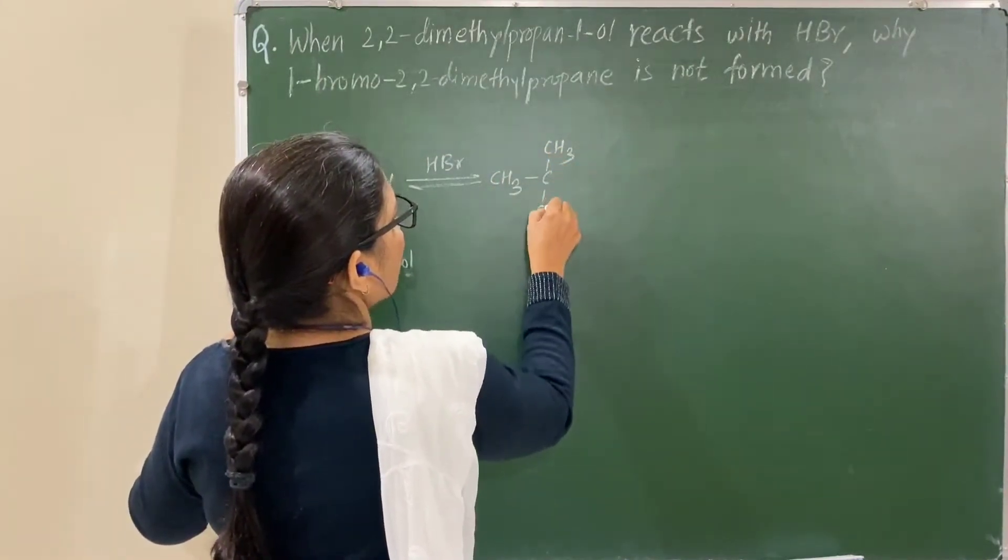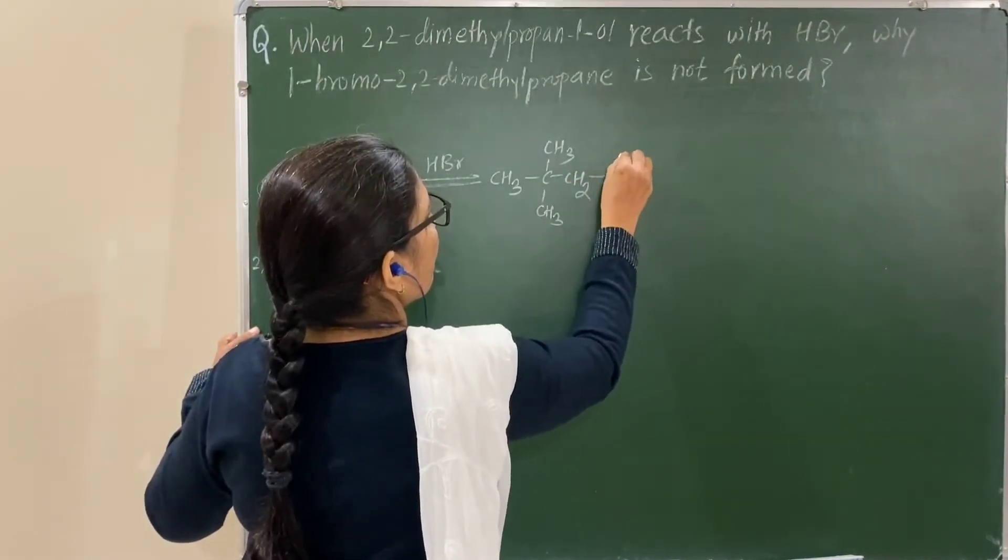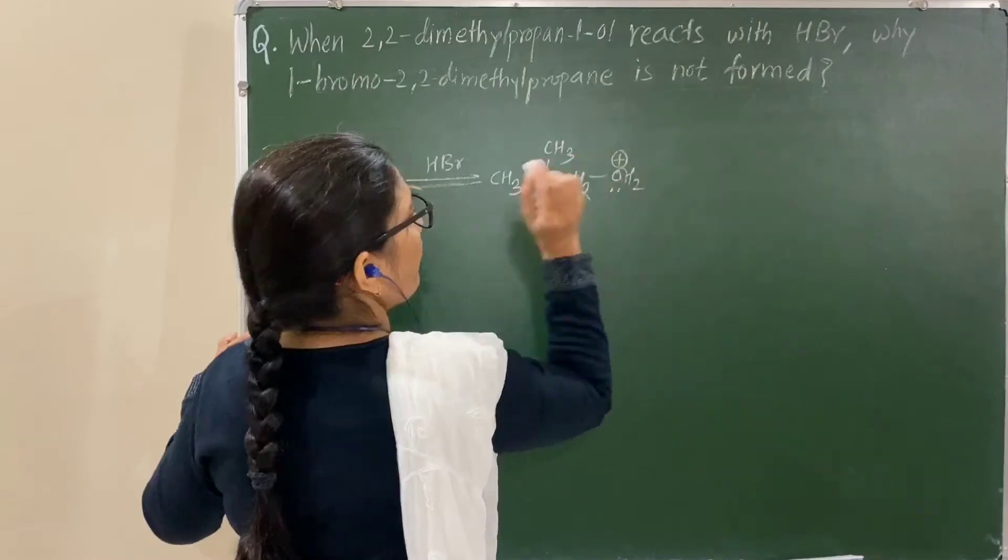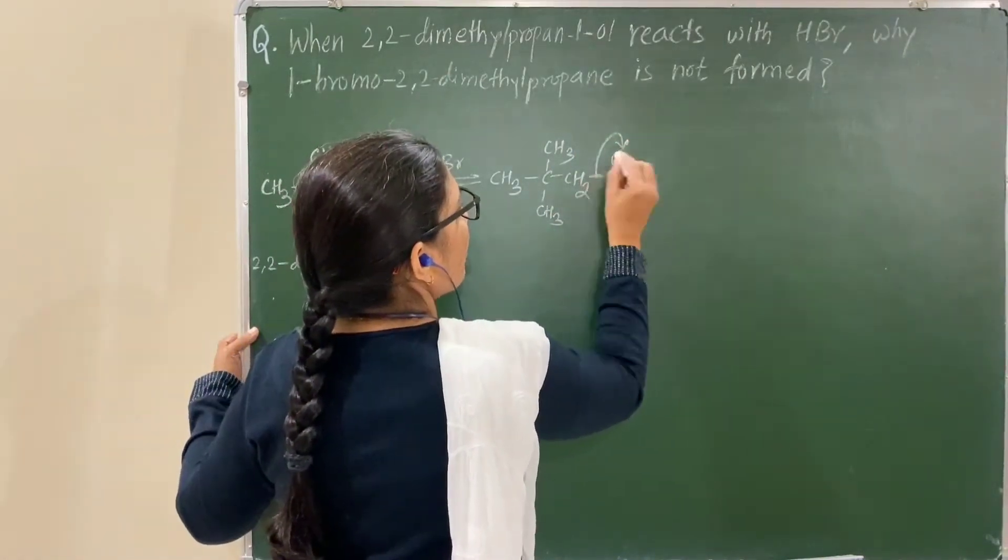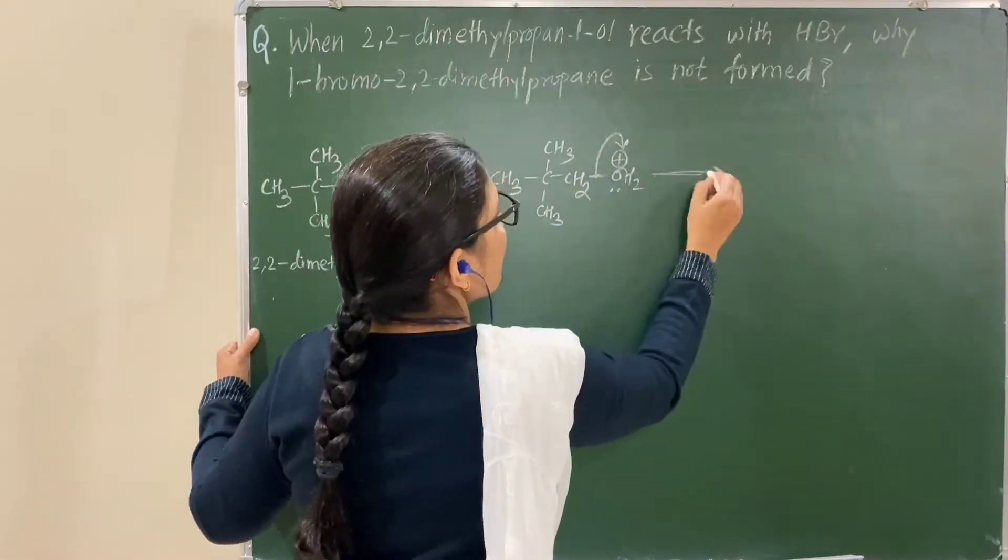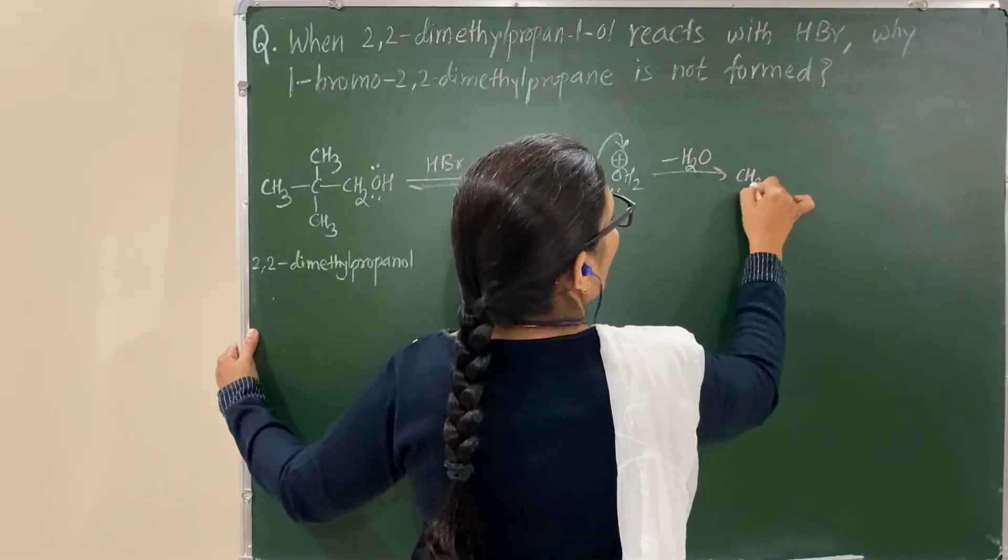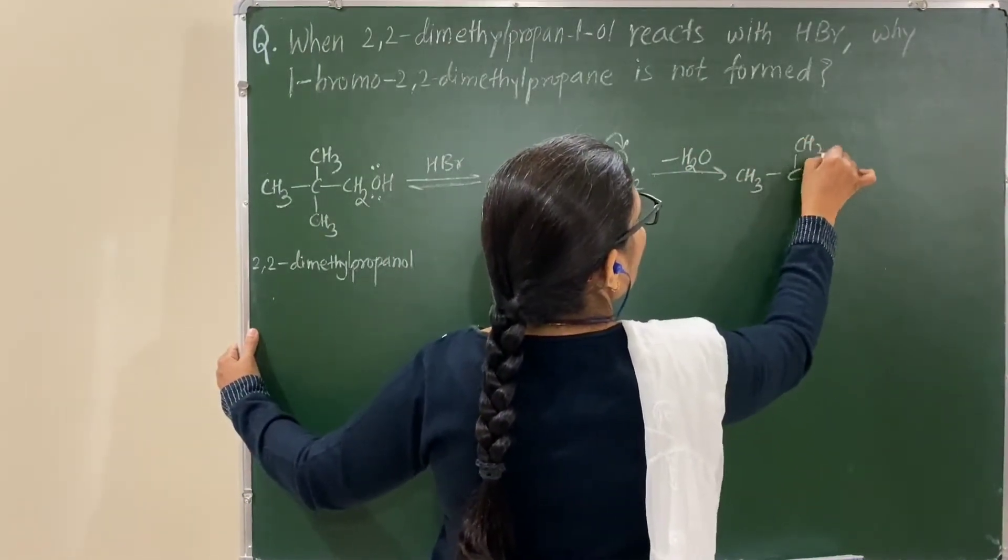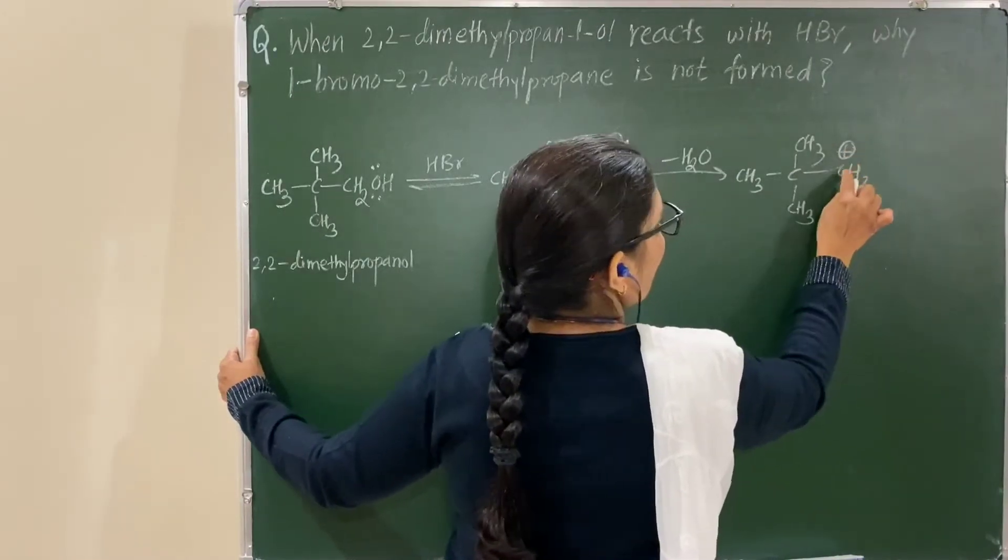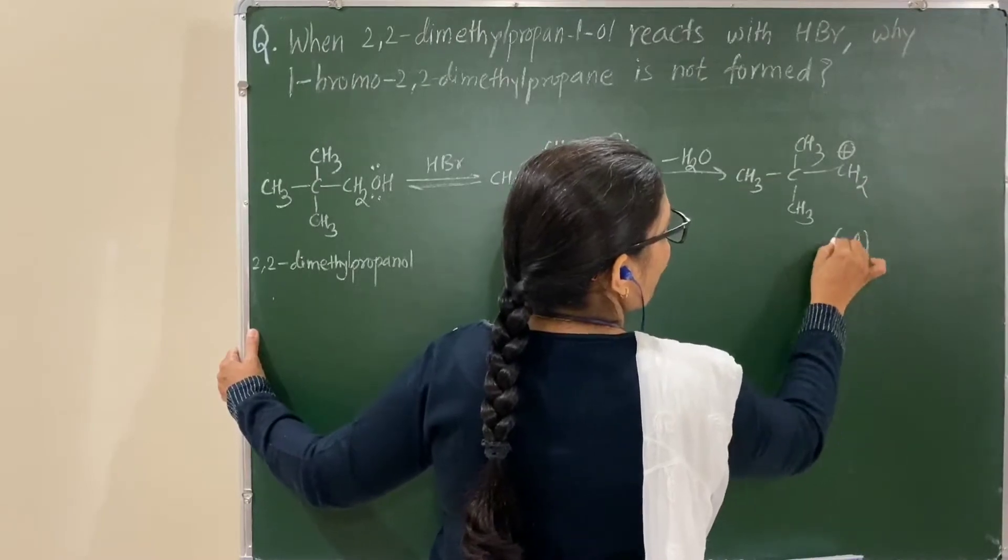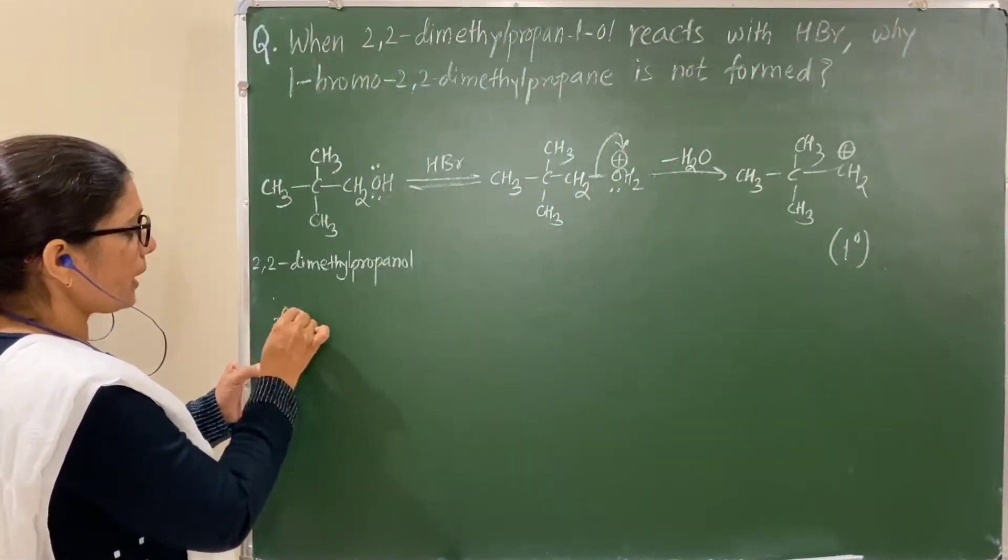This forms a protonated alcohol. Water is then removed to form a carbocation. This carbocation is a primary carbocation.